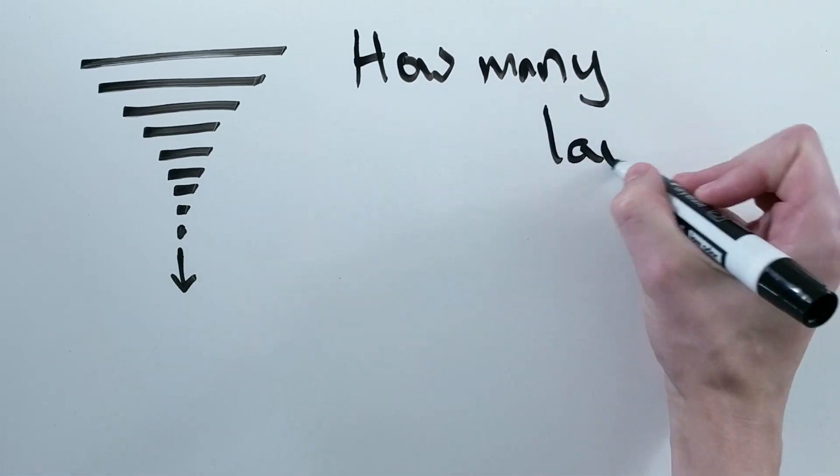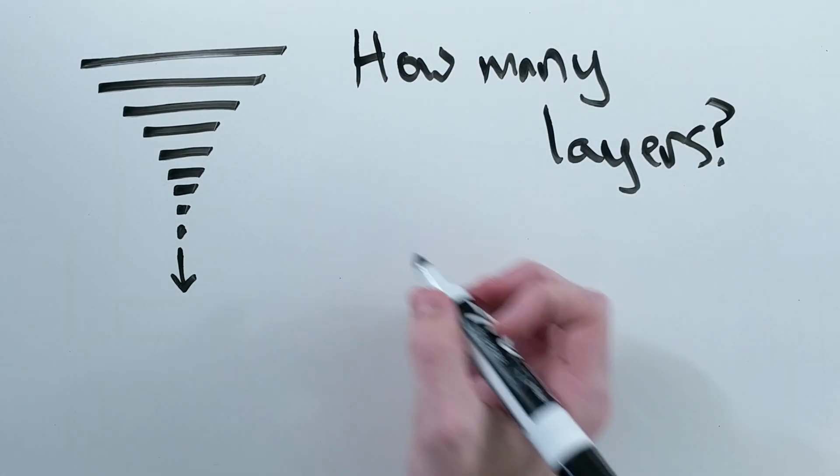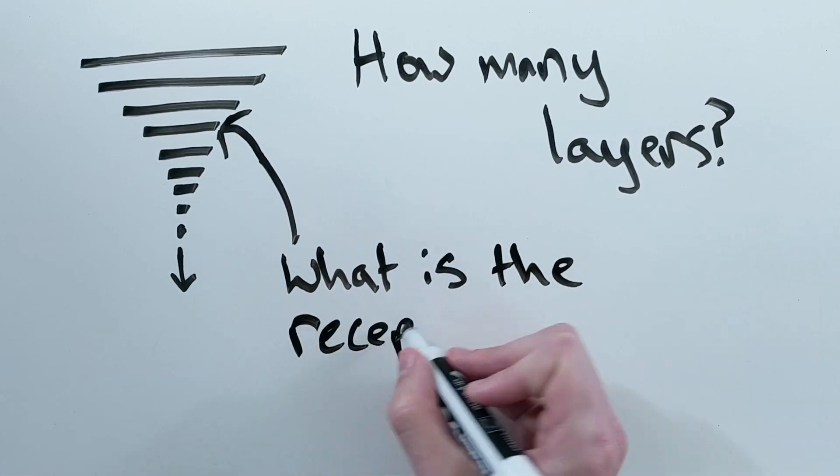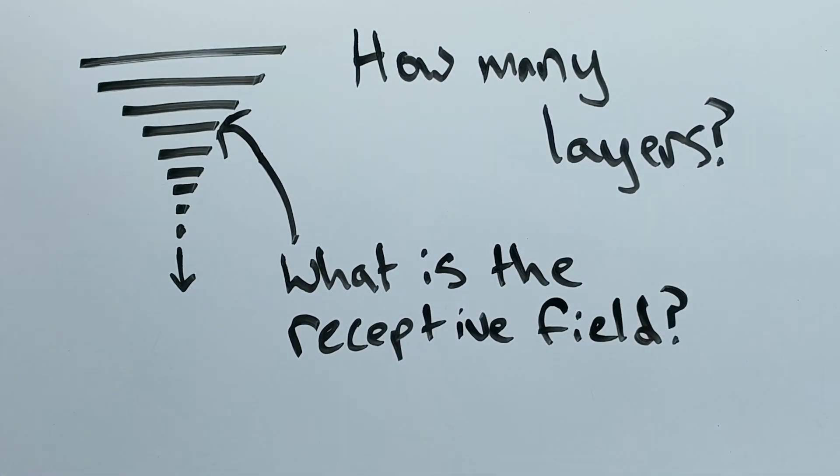For example, how many layers do we use in our networks? How do we tell how much of the image that an intermediate convolutional layer sees?